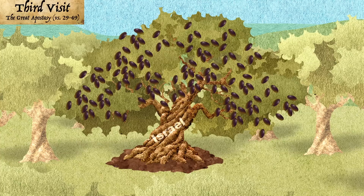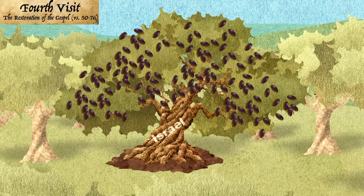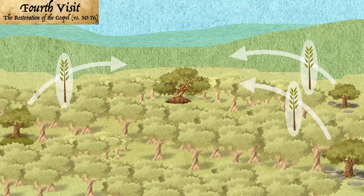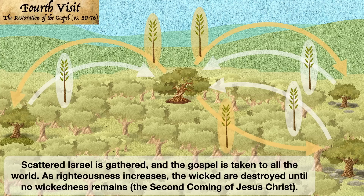Let us go to and hew down the trees of the vineyard, and cast them into the fire, that they shall not cumber the ground of my vineyard, for I have done all. What could I have done more for my vineyard? Yea, I will spare it a little longer, for it grieveth me that I should lose the trees of my vineyard. Wherefore, let us take of the branches of these which I have planted in the nethermost parts of my vineyard, and let us graft them into the tree from whence they came. And let us pluck from the tree those branches whose fruit is most bitter, and graft in the natural branches of the tree in the stead thereof. And behold, the roots of the natural branches of the tree which I planted whithersoever I would are yet alive. Yea, I will graft in unto them the branches of their mother tree, that when they shall be sufficiently strong, perhaps they may bring forth good fruit unto me, and I may yet have glory in the fruit of my vineyard.